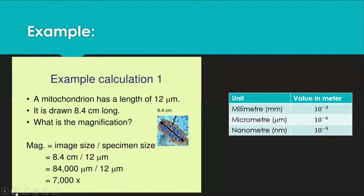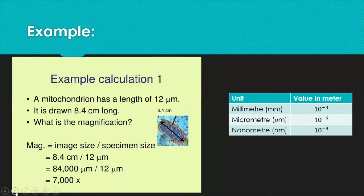Let's see an example. A mitochondrion has a length of 12 micrometers and it is drawn 8.4 centimeters long — what is the magnification? Magnification equals drawn image length divided by actual image length. The drawn image length is 8.4 centimeters and the actual image is in micrometers, so the units are different. We need to convert them to the same unit. I've provided a table on the right showing millimeter, micrometer, and nanometer with their powers of 10 to help with unit conversion.